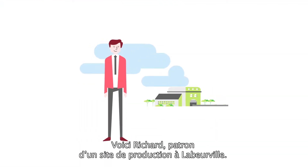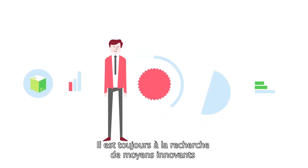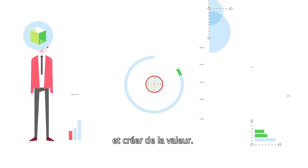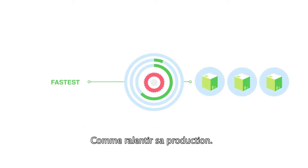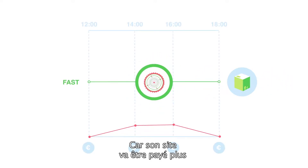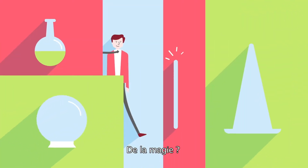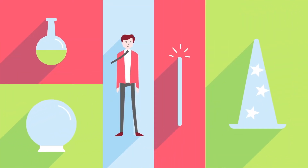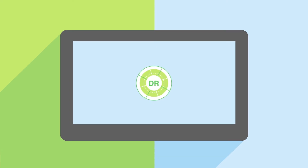Meet Richard. He runs a factory in Busyville. Richard's always finding innovative ways to improve performance and create value — like slowing down production. Because Richard's company is actually going to get paid extra to temporarily make less. Is he a magician? No. Richard is just smart about value creation.